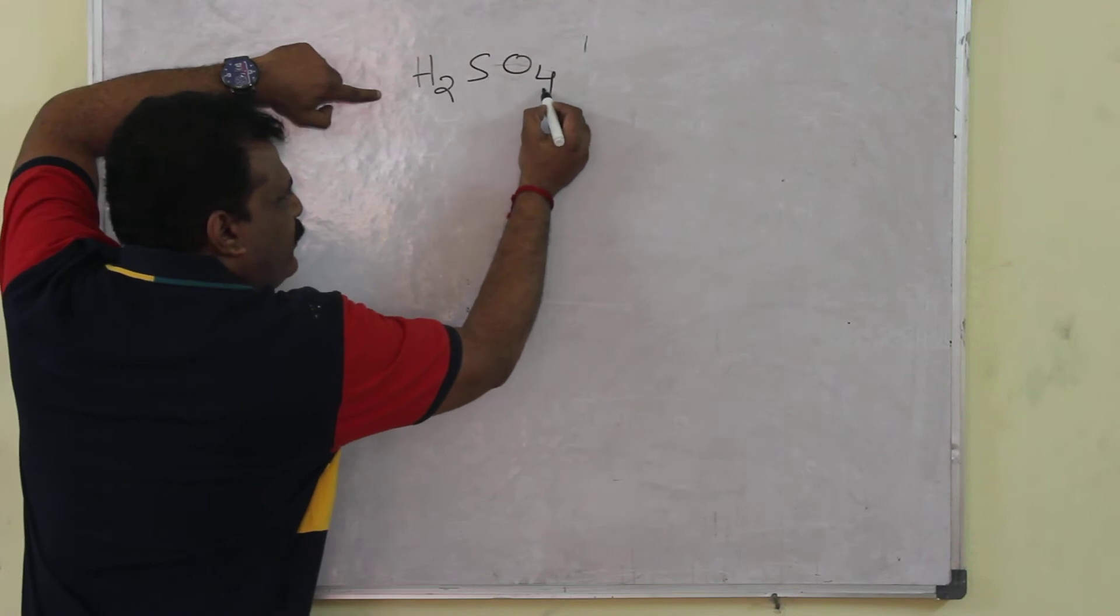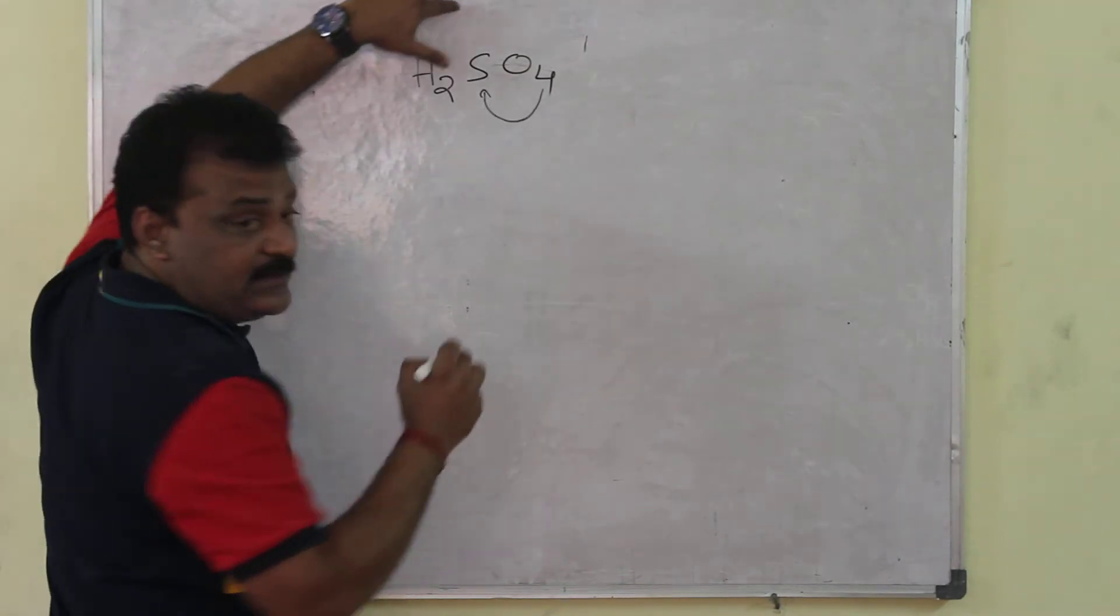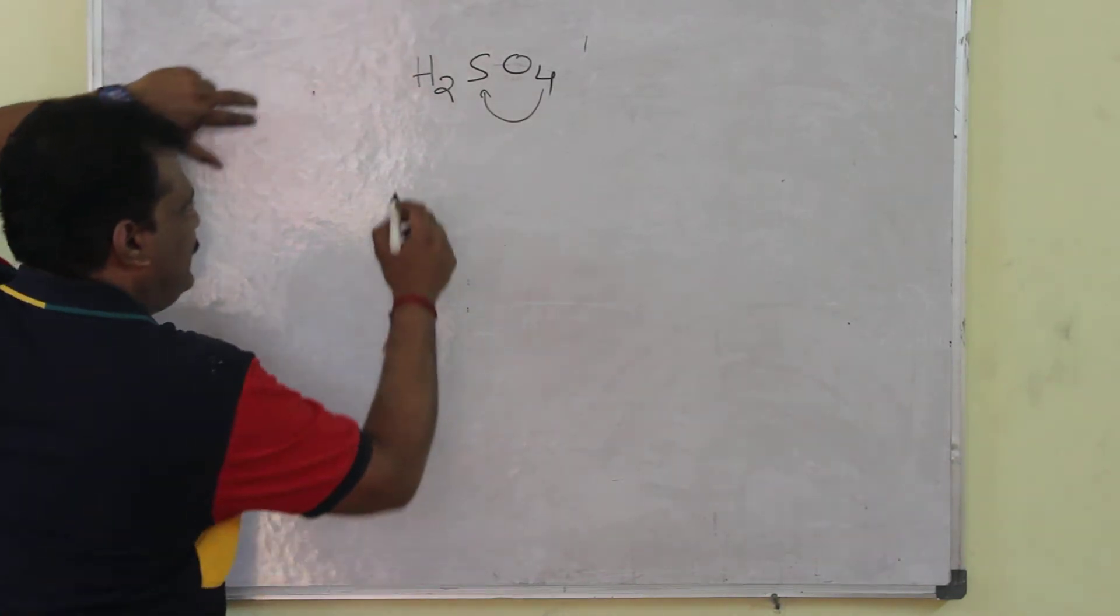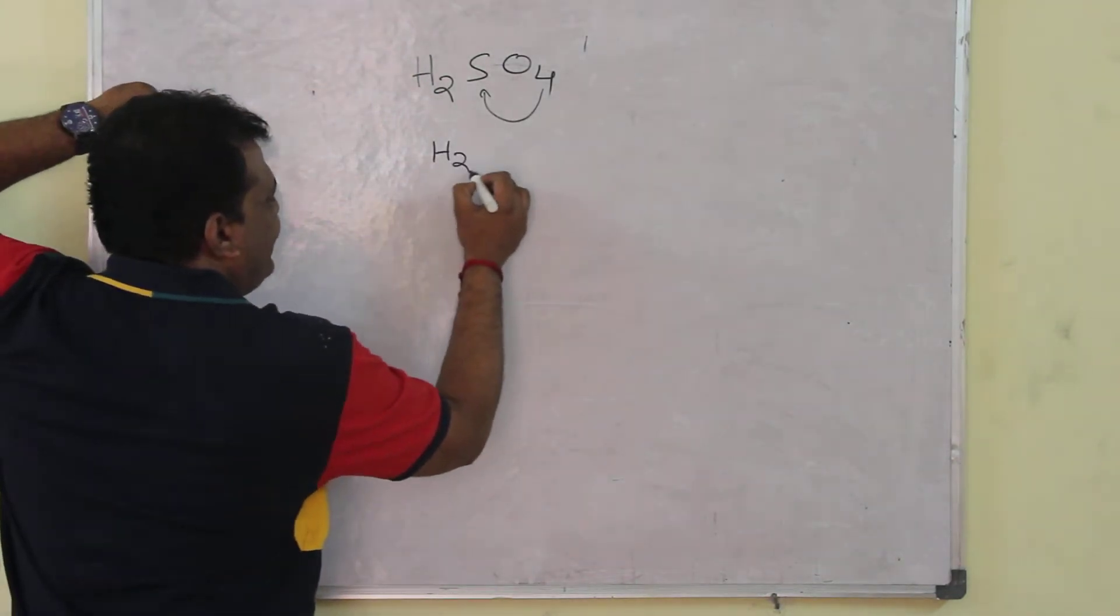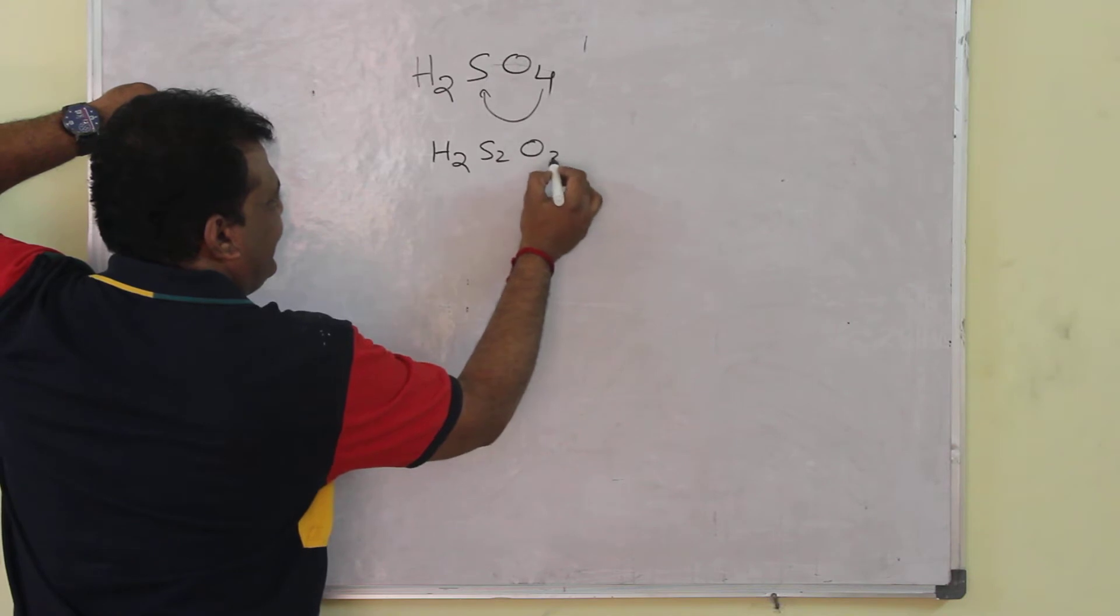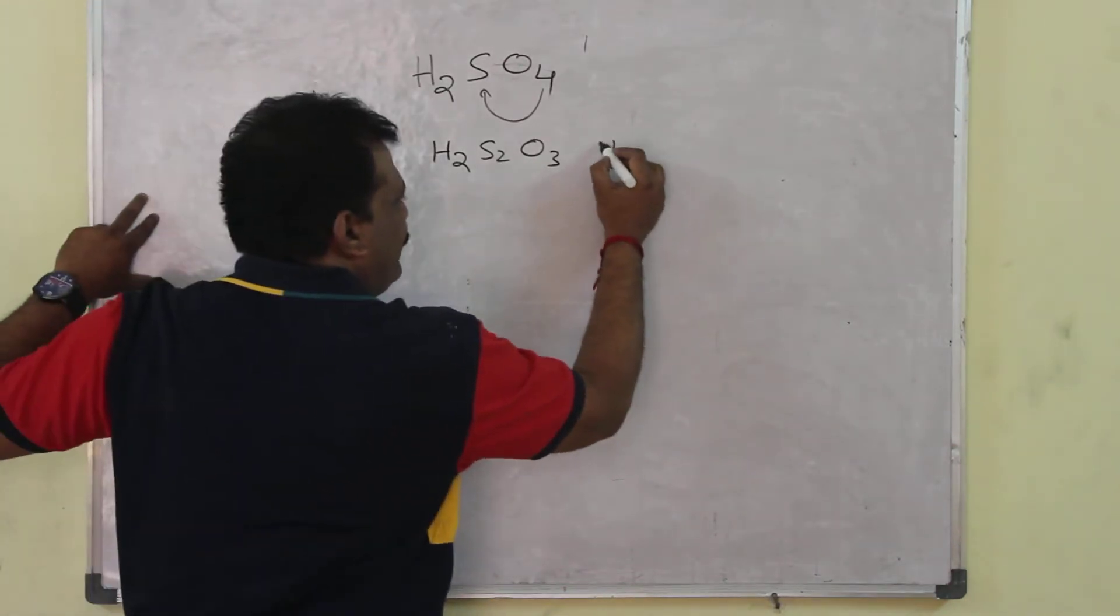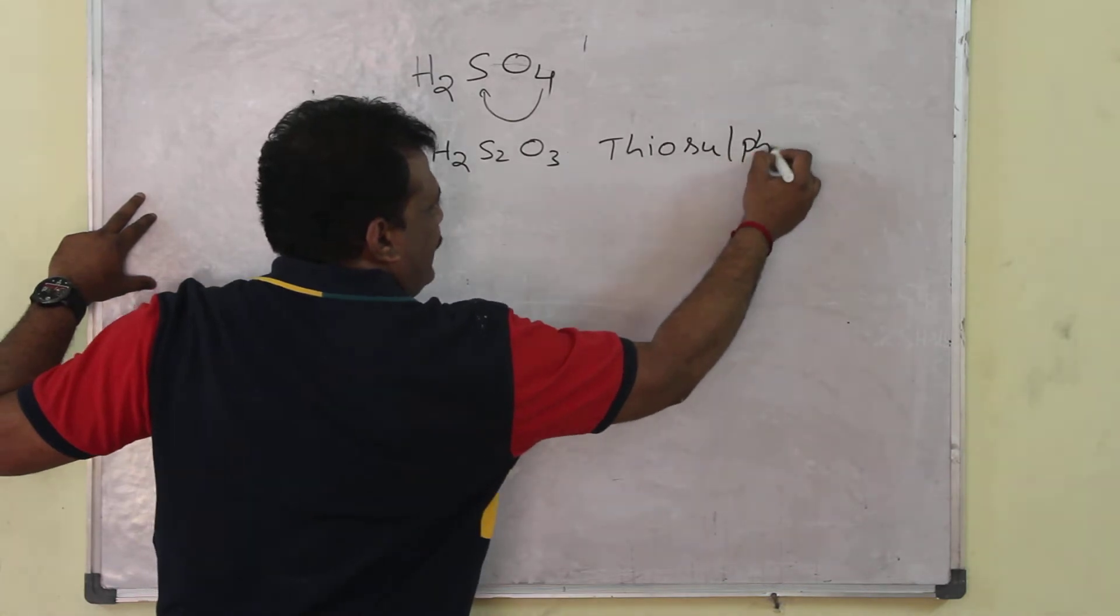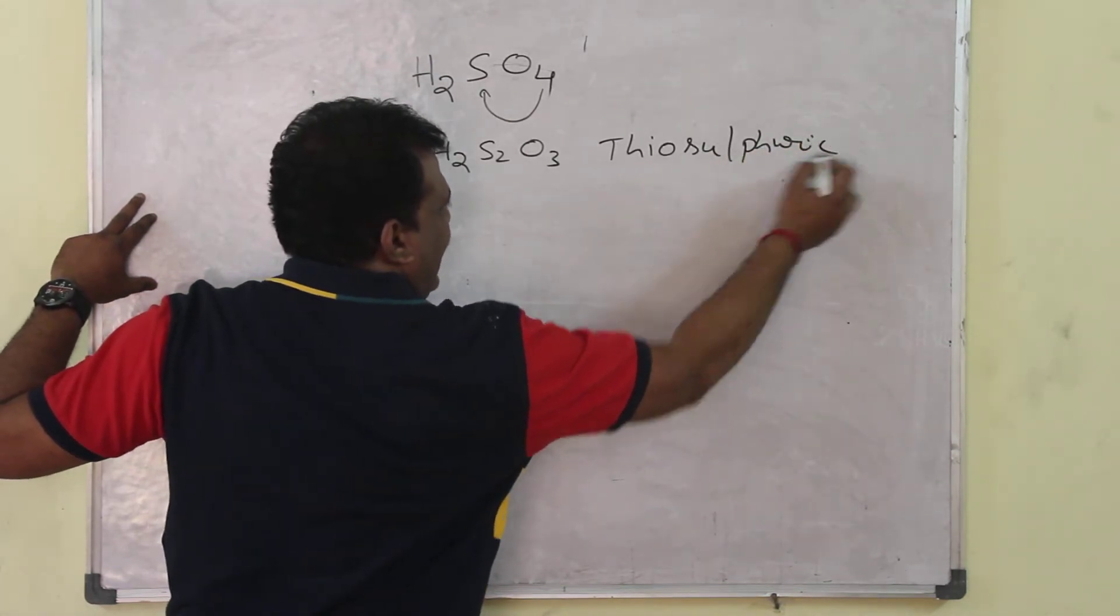Transfer one of the oxygen atoms to sulfur. Because both oxygen and sulfur belong to the 6th group, right? From H2SO4, this becomes thiosulfuric acid.